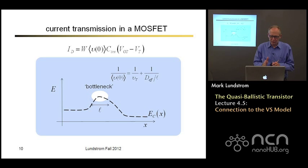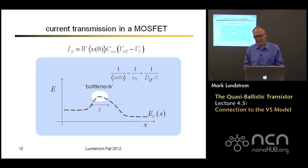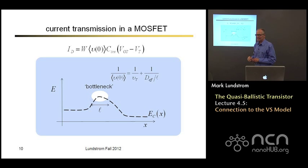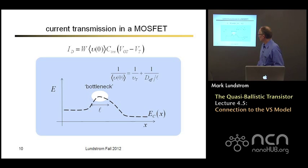Focusing on the top of the barrier — the virtual source — our current is width times average velocity times charge at the top of the barrier. This average velocity is given by one over the ballistic injection velocity plus one over D/L, where D/L has units of velocity — physically representing the average velocity at which electrons are diffusing across the thin bottleneck region. As that region gets shorter, this diffusion velocity gets higher, but it cannot physically exceed the thermal velocity. When the channel is very short and carriers are trying to diffuse faster than the thermal velocity permits, we're in the ballistic regime and the ballistic velocity becomes the limiting quantity.